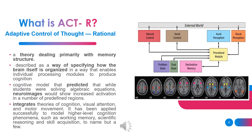It is a theory dealing primarily with memory structure — a way of specifying how the brain itself is organized using eight modules, with a cognitive model that predicts neuroimages. It integrates theories of cognition, visual attention, and motor movement. It has been applied successfully to model higher-level cognition phenomena such as working memory, scientific reasoning, and skill acquisition, to name but a few.